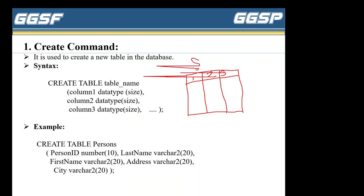Suppose I want to create a table — a student table with three columns: serial number, name of employee, and address of employee. With the help of the CREATE command, you can create the database table. You start with the CREATE keyword, then TABLE, then the name of the table you want to create.